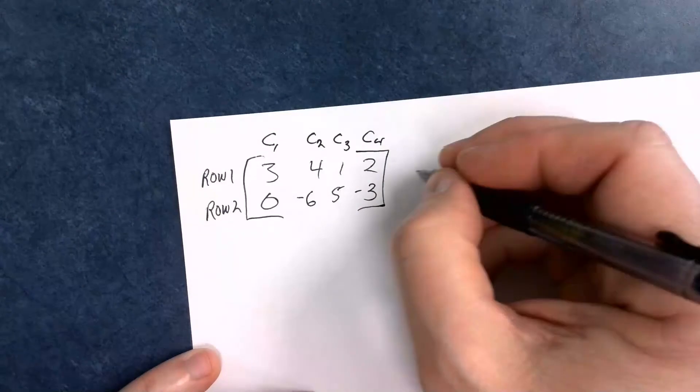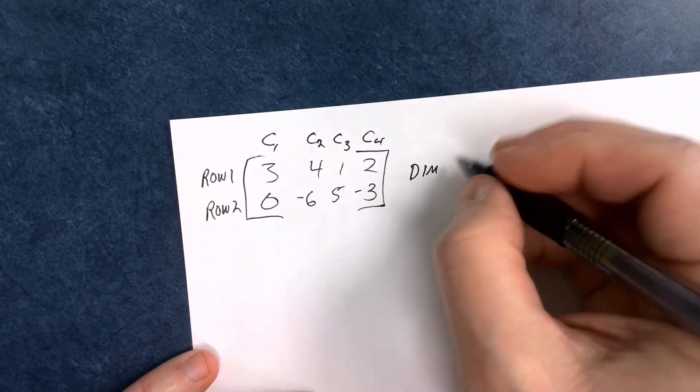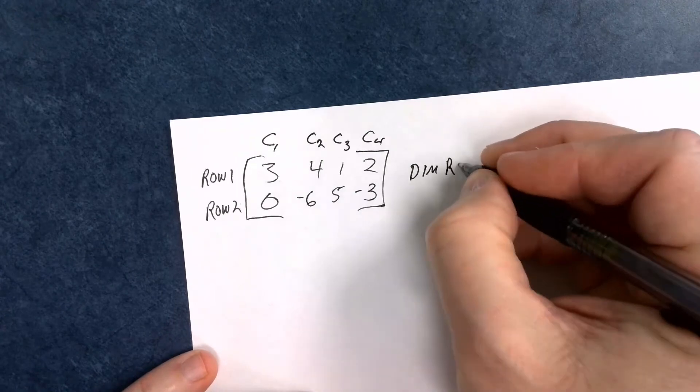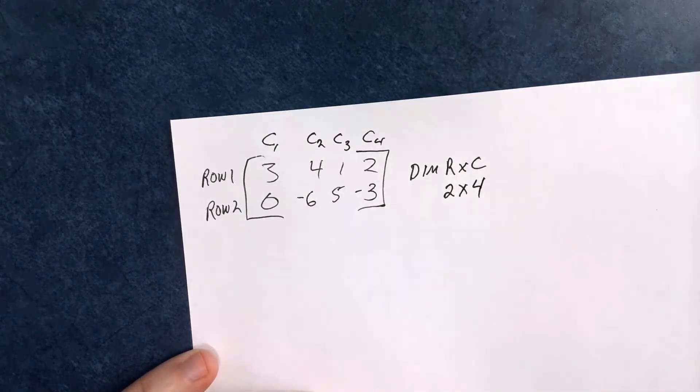So in terms of how to describe it, it has something called a dimension. And its dimensions are rows by columns. So this one happens to be a matrix that is 2 by 4.